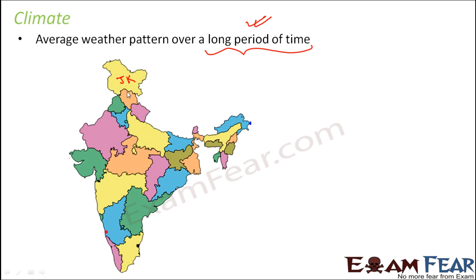So we say that Jammu and Kashmir has a cold climate. What does that mean? That doesn't mean that today the weather in Jammu and Kashmir is cold. That doesn't mean that.